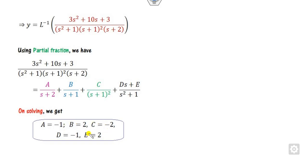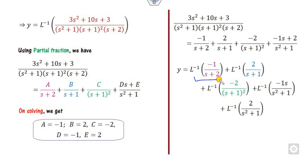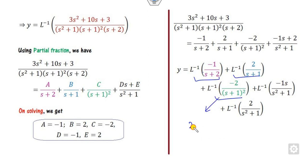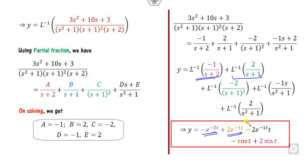After solving you get the values a, b, c, d. Substitute the values and take the L-inverse on both sides. The Laplace inverse of the first term involves e raised to power minus 2t. The next term involves e raised to power minus t. For the remaining part, you use the shifting first theorem — take e raised to power minus t outside and the Laplace inverse of 1/s-squared is t. So the answer of that part is 2t·e raised to power minus t. Another value is cos and another is sine.